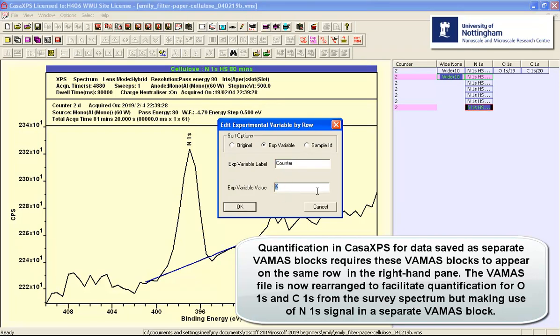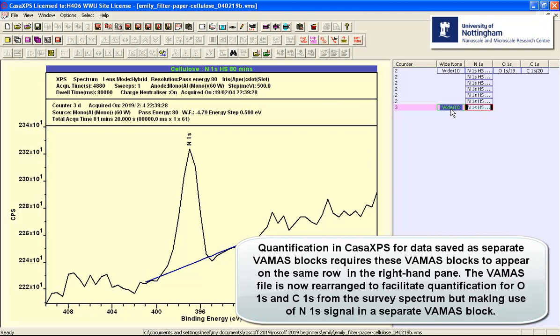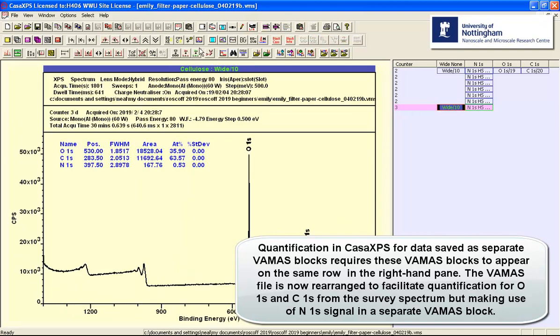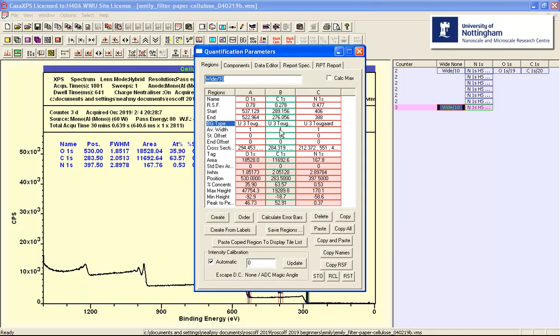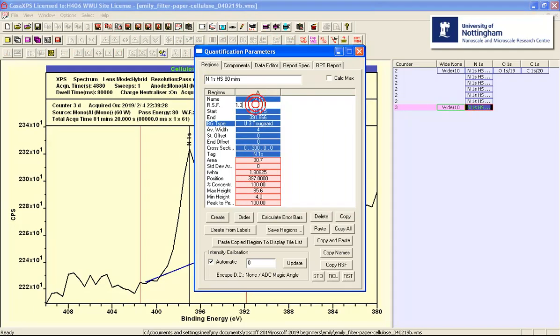And I need to align these. So what I'll do is I'll assign the same experimental variable. So I'm going to, rather than have two, I'm going to set these both as three. So here we have them. They are now both aligned. And I'm going to remove from the survey spectrum that I copied nitrogen.